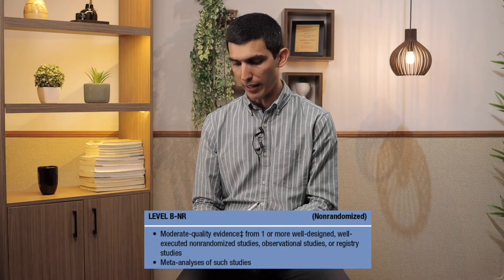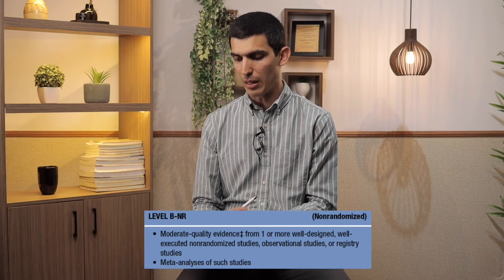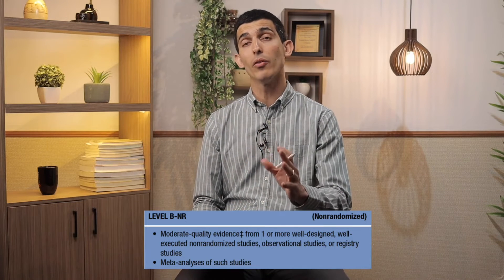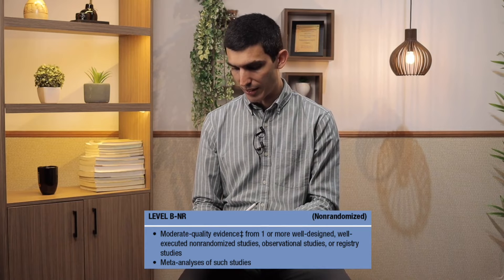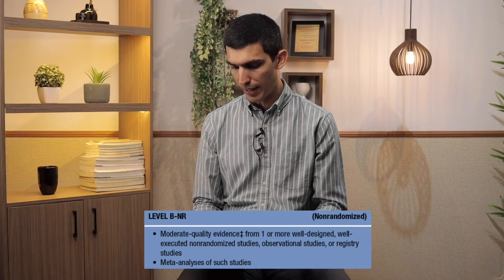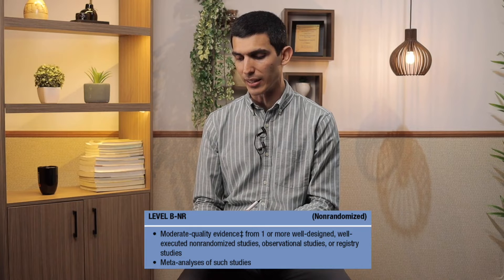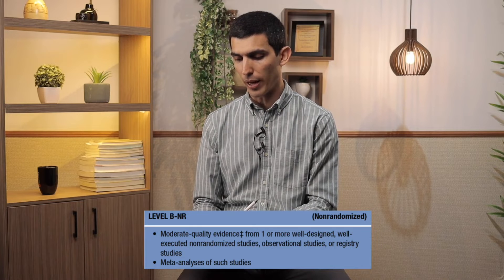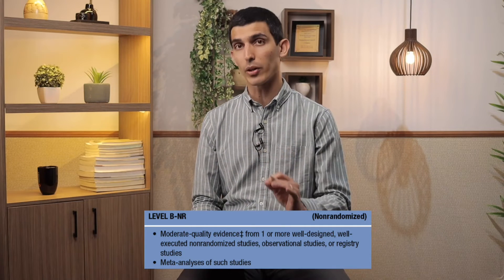In contrast, you could have a level of evidence B non-randomized, meaning it is also moderate quality evidence but it comes from well-done observational studies, non-randomized trials, or a meta-analysis of non-randomized trials. That is considered moderate quality evidence.